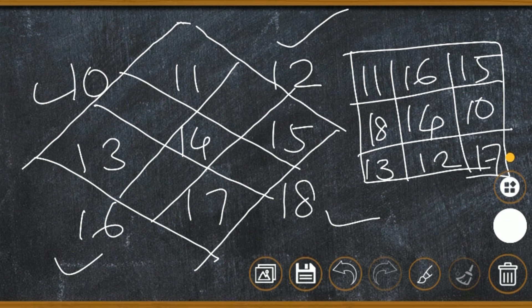Let us add these numbers: 15 plus 10 plus 17, what is the answer? It is 42. Next, 16, 14 plus 12, that also the answer is 42. 11, 18, 13, that also, let us add, the answer is 42. I hope all of you understood how to make a magic square.